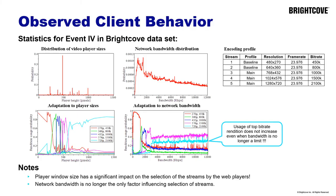This slide shows statistics of event four in our data set. On the right, we see the encoding profile with five renditions. In the middle, we see the network bandwidth distribution as observed and measured in BPS reported by clients. There is also a distribution of video player sizes, where we see about 11 resolutions as most distinct and highly used in this event. At the bottom, we are showing conditional probability distributions of load of each rendition as a function of either bandwidth on the right or player size on the left.